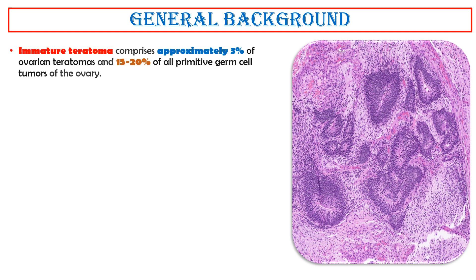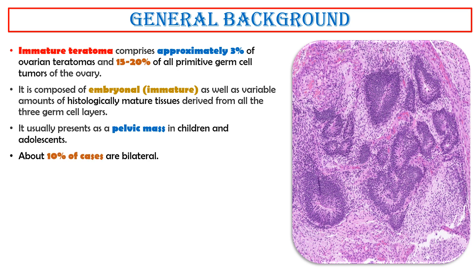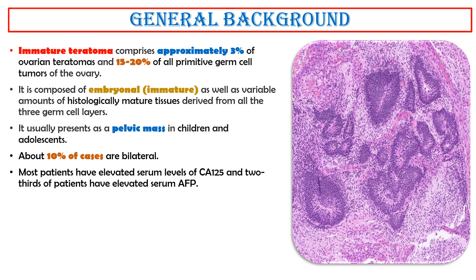General background. Immature teratoma comprises approximately 3% of ovarian teratomas and 15–20% of all primitive germ cell tumors of the ovary. It is composed of embryonal, immature, as well as variable amounts of histologically mature tissues derived from all three germ cell layers. It usually presents as a pelvic mass in children and adolescents. About 10% of cases are bilateral. Most patients have elevated serum levels of CA-125, and two-thirds of patients have elevated serum alpha-fetoprotein.